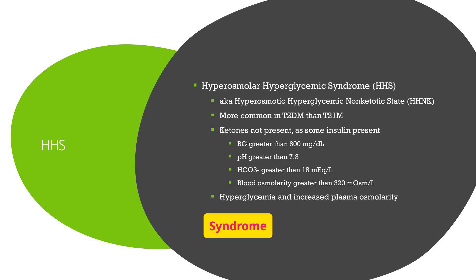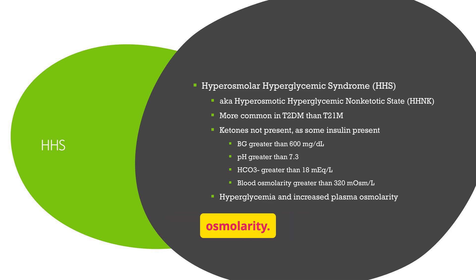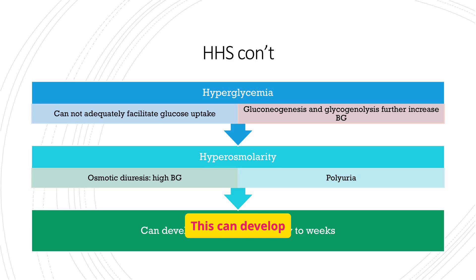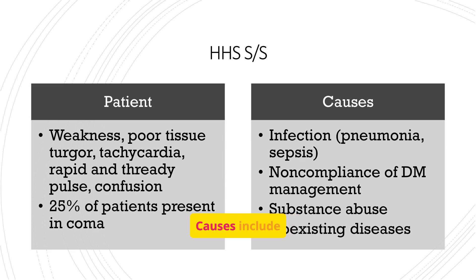Hyperosmolar hyperglycemic syndrome, HHS, also known as HHNK, is more common in type 2 diabetes. Ketones are not present as some insulin is still available. Blood glucose is very high and there is increased plasma osmolarity. HHS develops due to hyperglycemia leading to hyperosmolarity and osmotic diuresis, and can develop insidiously over days to weeks. Symptoms include weakness, poor tissue turgor, tachycardia, and confusion; in severe cases, patients may present in a coma. Causes include infection, noncompliance with diabetes management, substance abuse, and coexisting diseases.